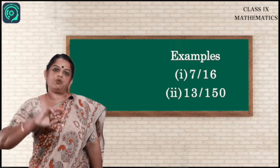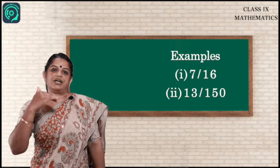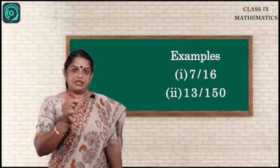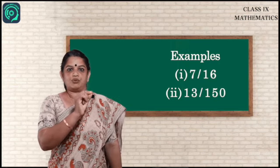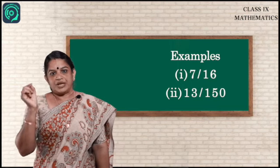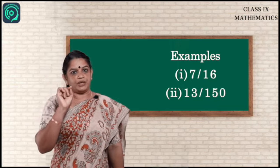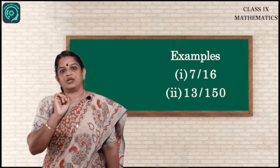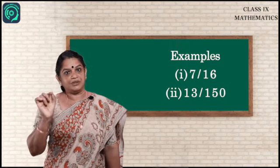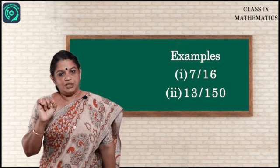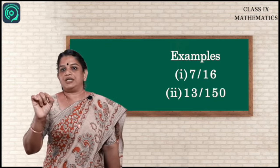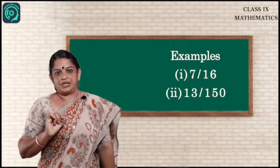Let us see one more example: 13/150. By prime factorization, 150 = 2 × 3 × 5². Since 3 is present in the denominator, we cannot write it in the form 2^m × 5^n. Therefore, 13/150 has a non-terminating and recurring decimal expansion.